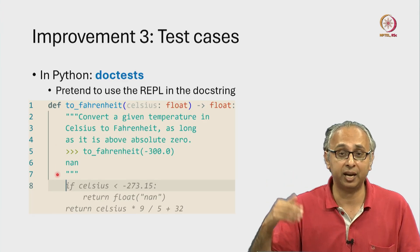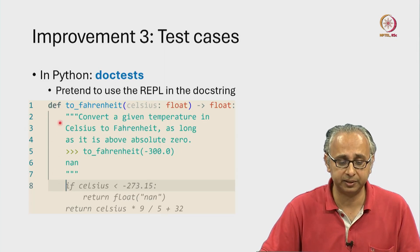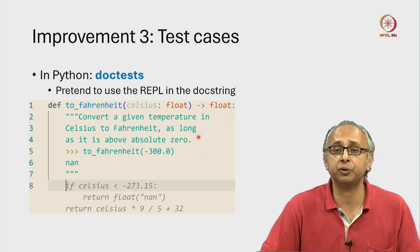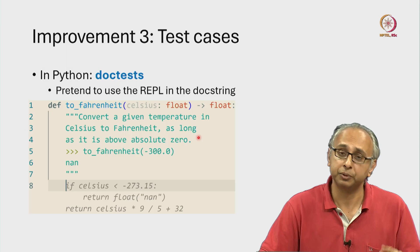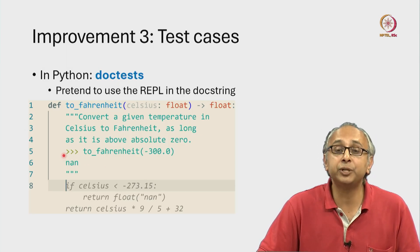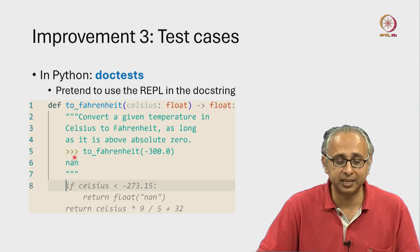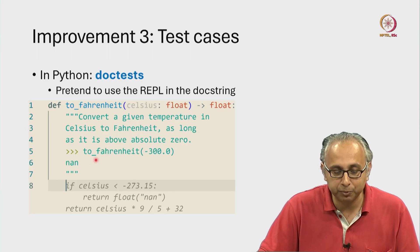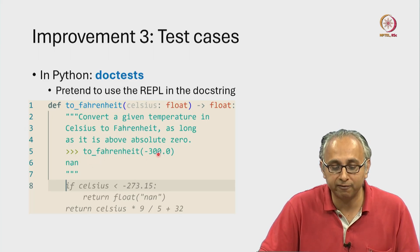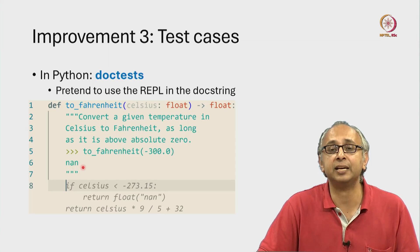Remember, with triple quotes we can have multi-line docstrings — all of it must be indented correctly. This docstring again just tells us what to do as long as the temperature is above absolute zero: convert that temperature to Fahrenheit. But here we have pretended to be inside the REPL using the same syntax '>>>', and then we pretend to call our function with a value that is below absolute zero. When we press enter, we also tell it what value to return.